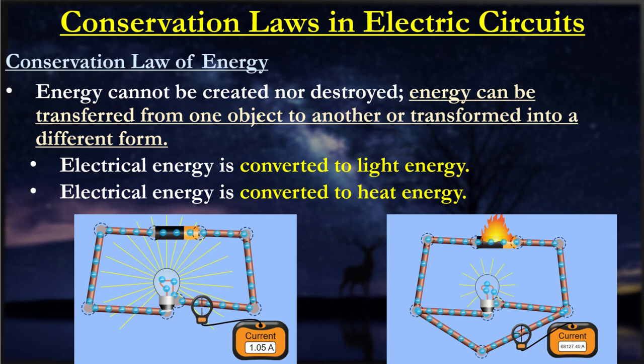Another thing we talk about is the law of conservation of energy in electric circuits. In an electric circuit, energy can't be created or destroyed. It has to be either transferred into something else, transferred from one object to another, or it's transformed. In this case here, we have electrical energy that can be transferred into light and also into heat if we have short circuiting or we're using these old filament light bulbs. That's what we're seeing in electric circuits.